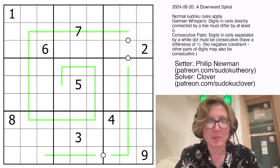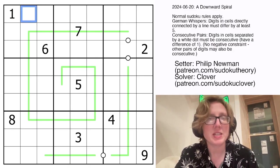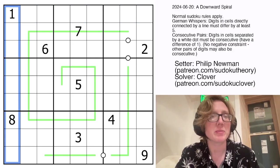So we have standard Sudoku rules, so we're placing the digits 1 through 9, once each in each row, each column, and each outlined 3x3 region.